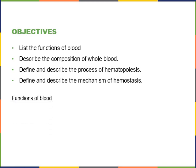Let's start off by listing the functions of blood: transport, regulation, and protection. Transport is the major function of blood. Blood is moving through the vessels of the cardiovascular system, the heart is pumping the blood, and blood is transporting nutrients and waste. The blood is also transporting hormones, which are important for the related function of regulation.